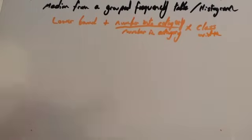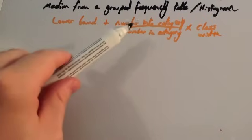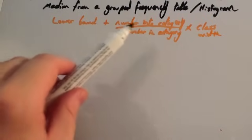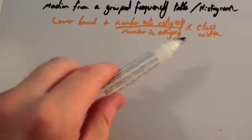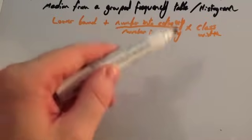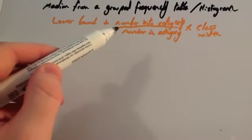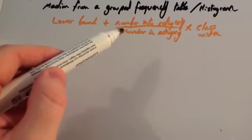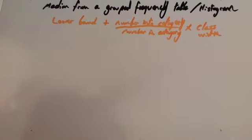And it's given by this formula. The formula is the lower bound plus number into category divided by number in category times the class width. So this fraction here is just telling you what fraction into the group, into the class, the median is. You times that by the class width to find out how many numbers into the group it is or what that fraction into the group that is. Then you add that onto the lower bound.